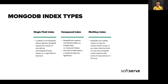All three of these types work out of the box and you don't need to specify any additional parameters to use them — just create the indexes. Moreover, you can build compound multi-key indexes. But there is a restriction: you cannot create a compound multi-key index if more than one field of a document is an array. That is a restriction of MongoDB.